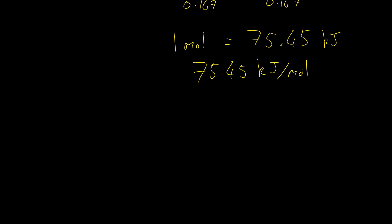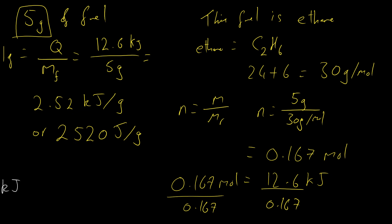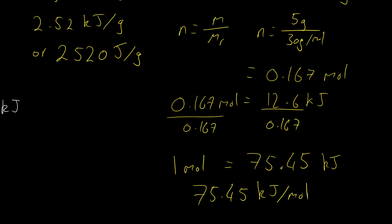There are other ways we could have done that - since one mole of ethane is 30 g and we had 5 g (one sixth of a mole), we could have just multiplied 12.6 by 6 to get the same answer. I hope that's helped you understand what we're doing with these calculations, what we're actually doing in the lab, and what our equations mean. If you have any questions please send an email or post a comment, and don't forget to like and subscribe as there are more videos coming soon.